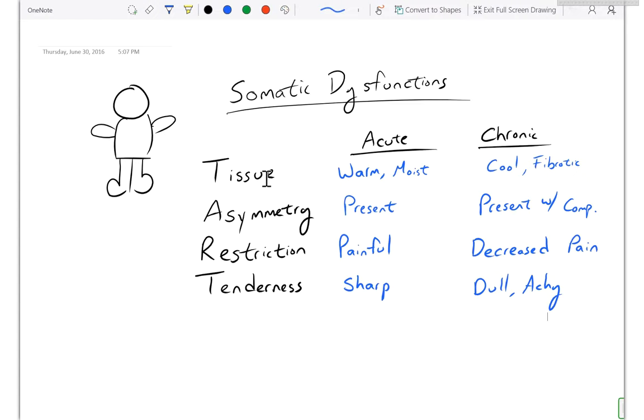The first question that usually comes up in OMM is what is a somatic dysfunction? Or what is OMM or OMT? When we think about OMM, we're going to look at the human body, find certain dysfunctions within the human body, and then treat it. There's a special term for this called somatic dysfunction. There are four criteria for what a somatic dysfunction is. The first one is tissue texture change, the next one is asymmetry, then restriction, and finally tenderness.